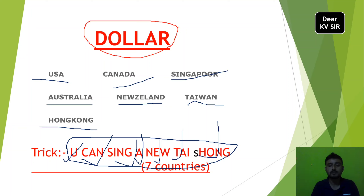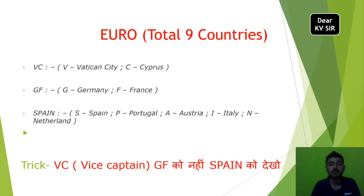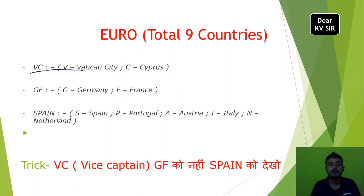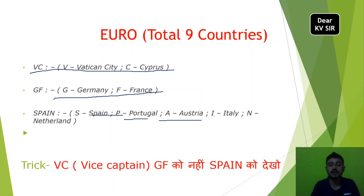Next, the currency of Europe is the Euro. The countries using the Euro include Vatican City, Cyprus, Germany, France, Spain, Portugal, Austria, Italy, and Netherlands.